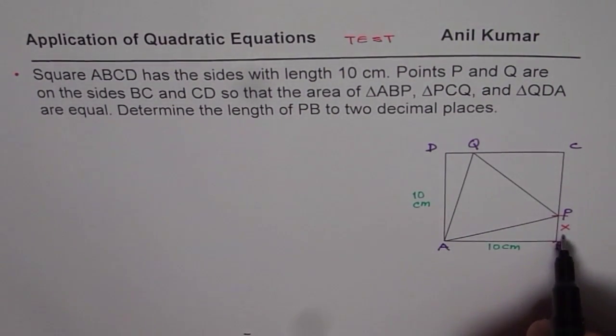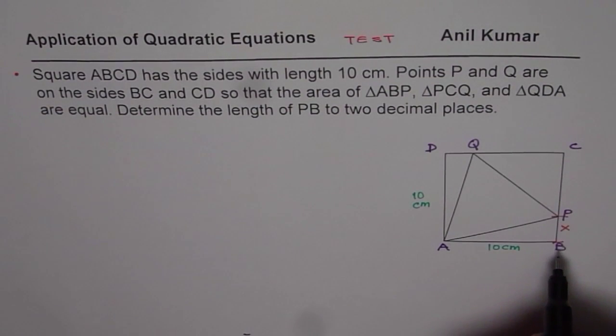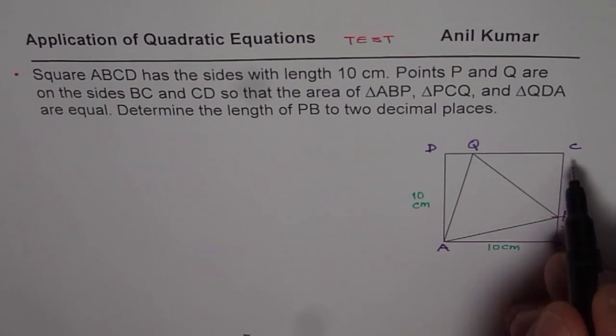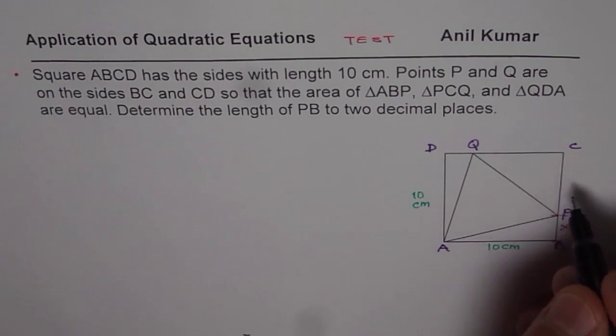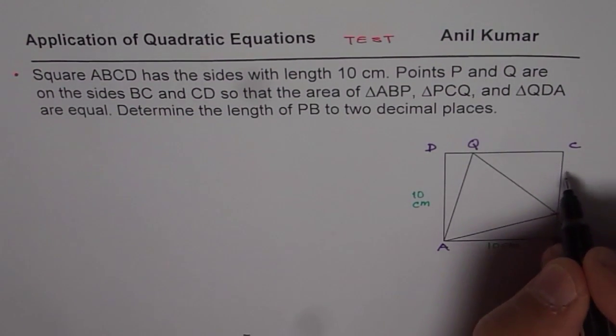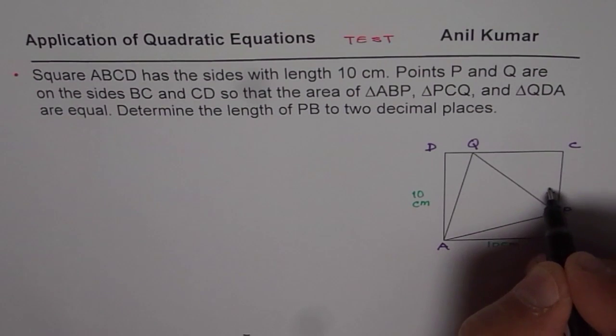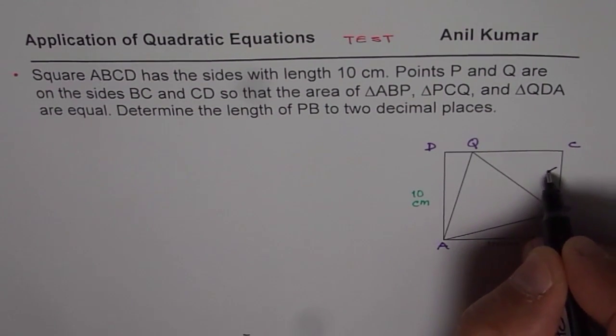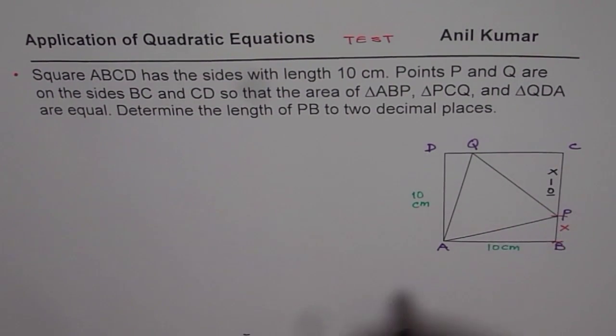Let X be the length of PB. In that case, if X is the length of PB, then CP will be 10 minus X. So let me write down this length as 10 minus X, so that becomes PC.